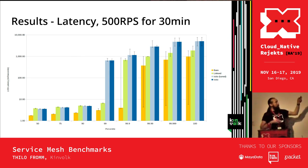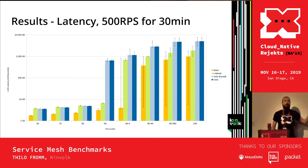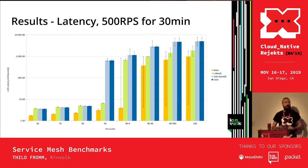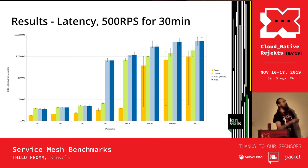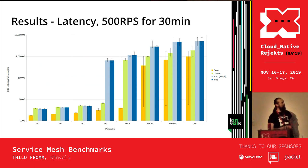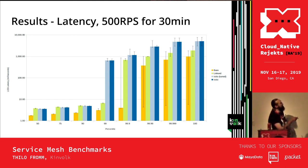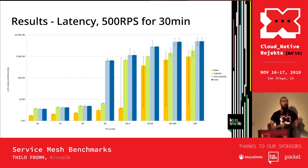These are our latency results for 500 requests per second run on EmojiVoto for 30 minutes — an extremely large time window designed to push differences. At the lower percentiles, there are virtually no differences between any of the service meshes. Only at higher percentiles in this large time window do minor differences emerge. Linkerd adds a little more latency than bare metal, and tuned Istio is a little bit ahead of that as well. Please note that this is a logarithmic axis — the differences only appear when really pushed to extremes.